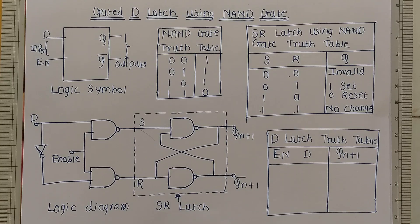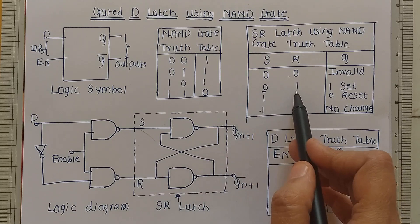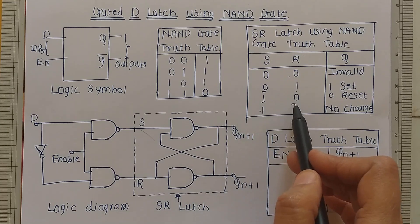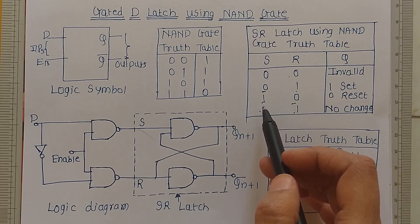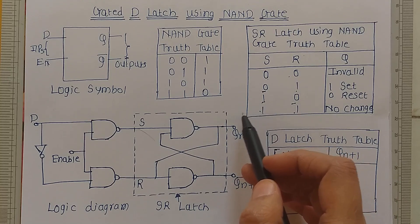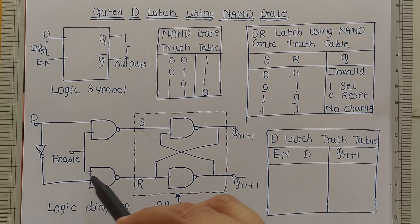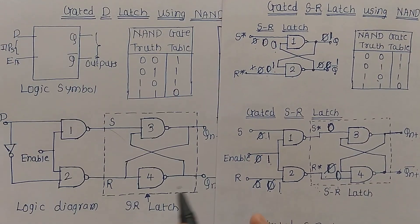We use the gated D latch instead of the gated SR latch when the S and R inputs are always complements of each other. Here we can see that S is zero and R is one, or S equals one and R equals zero. In the gated D latch, we give a single input D and get the second input by passing the D input through an inverter — that is, a NOT gate.